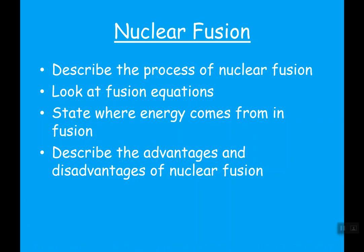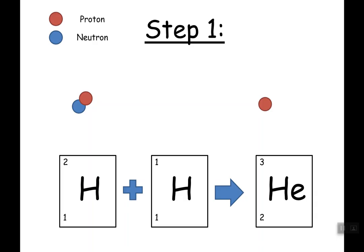Now let's look at fusion equations. When we talk about combining hydrogen into helium, we're not talking about plain hydrogen — we're talking about isotopes of hydrogen. Isotopes are atoms of the same element with the same number of protons but a different number of neutrons. When two hydrogen-1 nuclei combine, one of the protons turns into a neutron, producing deuterium — an isotope of hydrogen with one proton and one neutron.